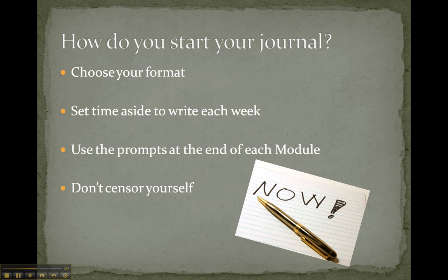Probably the most important thing to think about at this early stage is just how to get started. The first point is to choose your format — where and how are you going to write your journal? Some people might choose to write in something as simple as a school exercise book every week. You might choose a folder with loose-leaf paper to keep all your reflective writing in one place. Or you might like to do it electronically — just start a new Word document, save it to your computer, call it 'essay writing for university journal,' and each week you can go there and do some reflective writing and update the file as you go through the course.